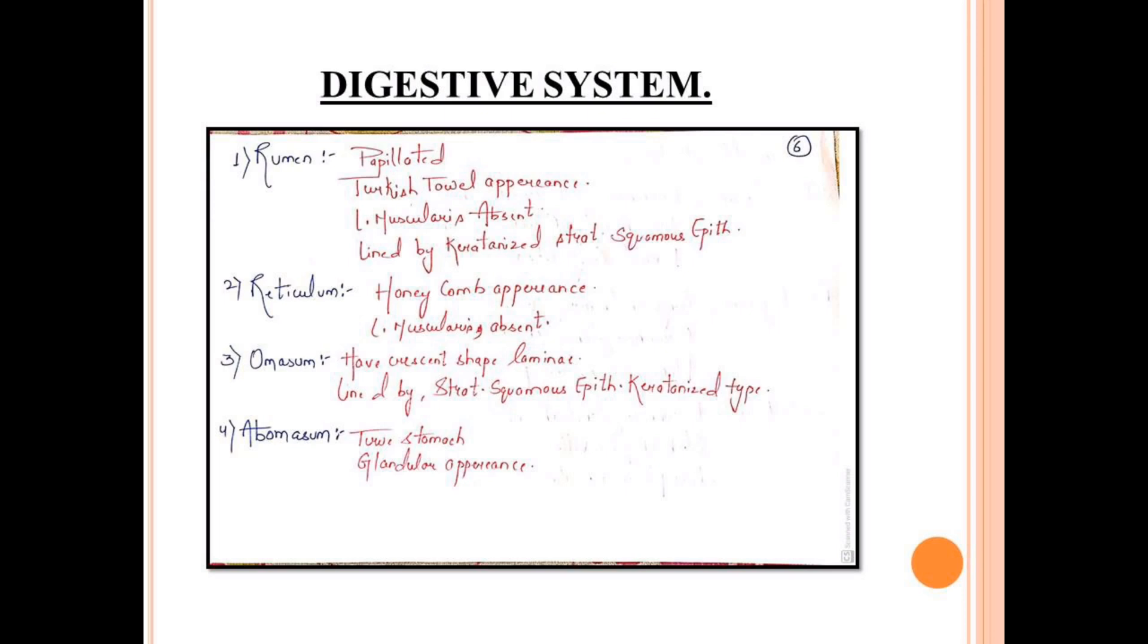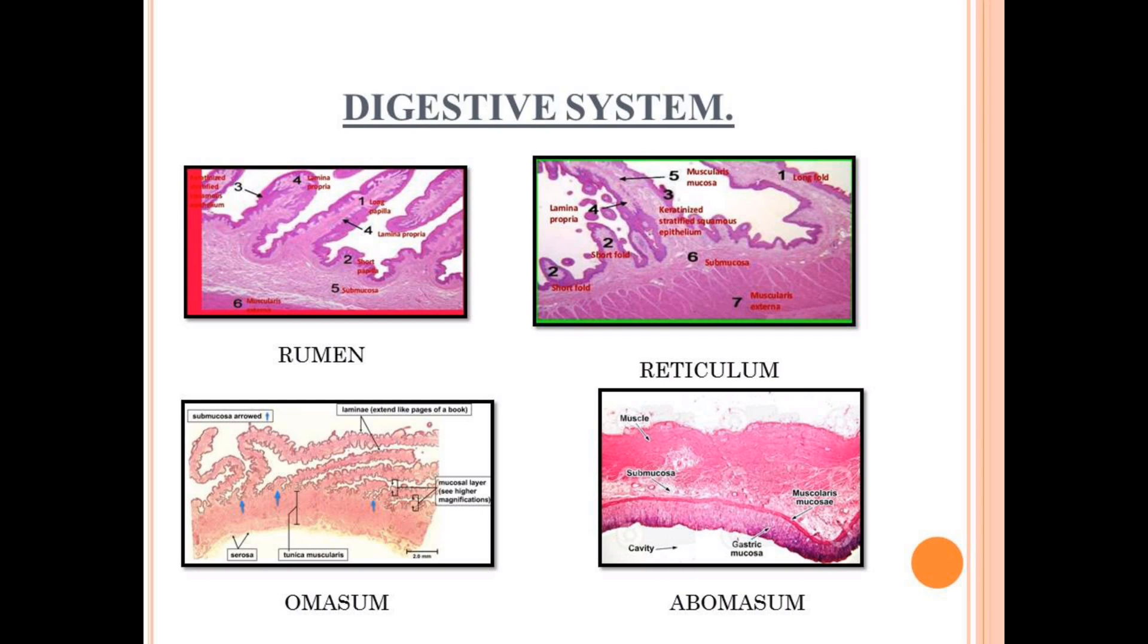Moving to the next chamber, the last chamber is abomasum. Abomasum is the true stomach and has a glandular appearance. Now these are some slides of rumen, reticulum, omasum, and abomasum. I think it might help you.